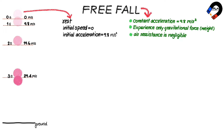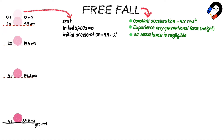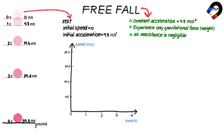After four seconds, the ball has descended a greater distance than it did between two and three seconds, and its speed at four seconds is 9.8 times 4, equal to 39.2 meters per second.